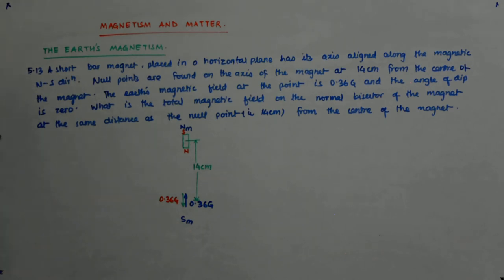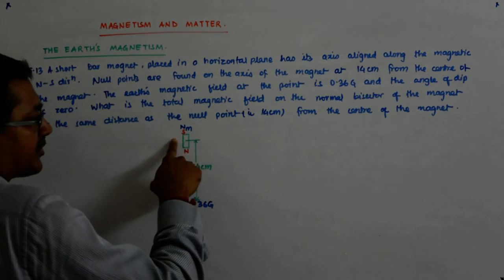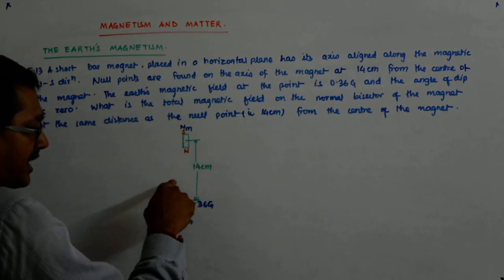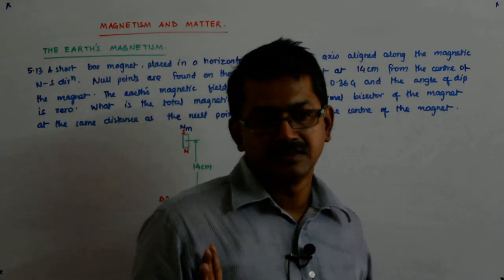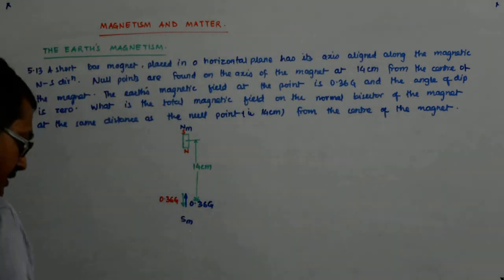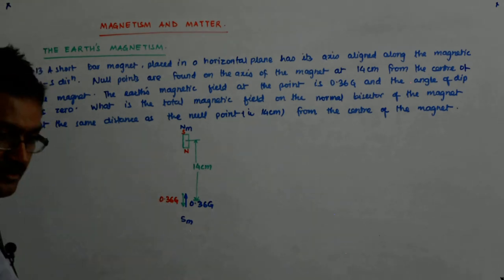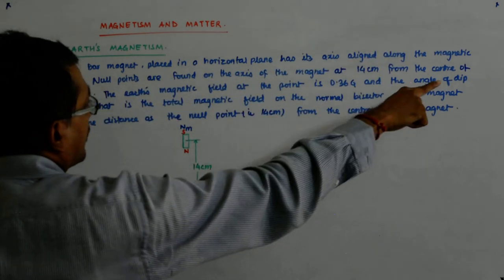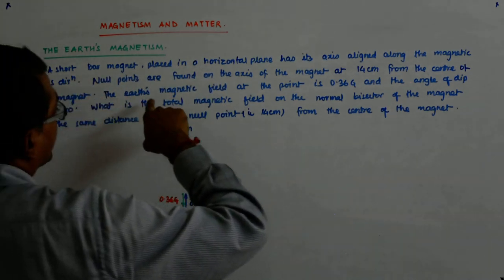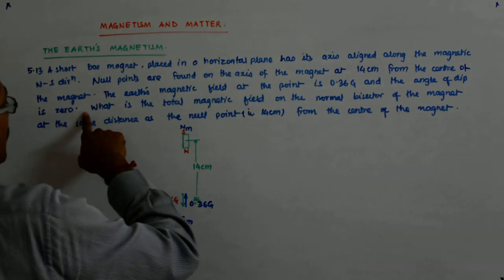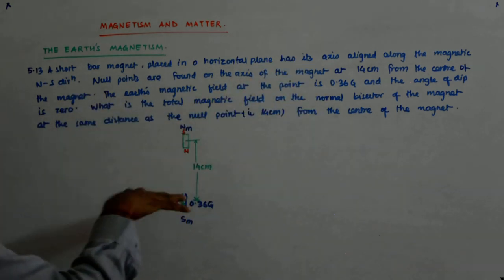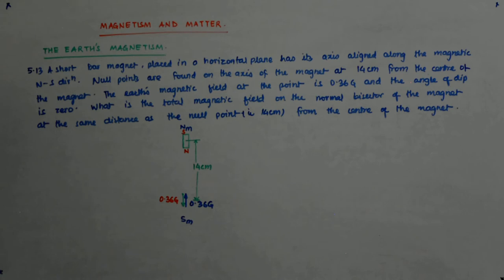Now what does that mean? It means simply that its magnetic moment is so much that at a distance 14 centimeters away, its magnetic field is 0.36 Gauss. This is the whole. The null points are found at 14 centimeters from the center of the magnet. The earth's magnetic field at the point is 0.36 Gauss and the angle of dip is 0. All this translates into only this.